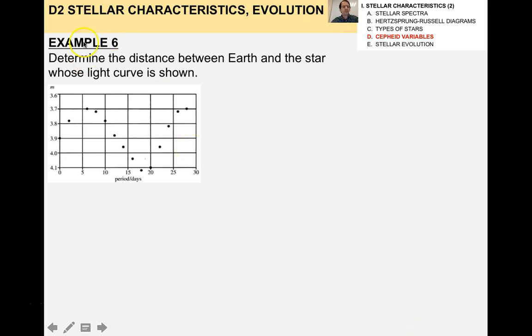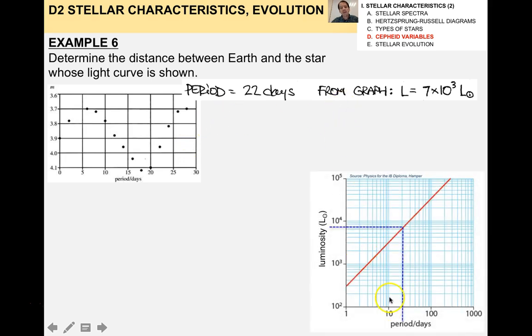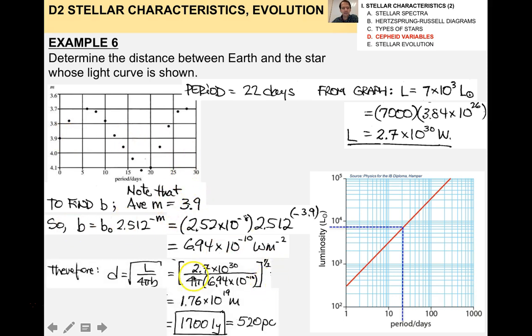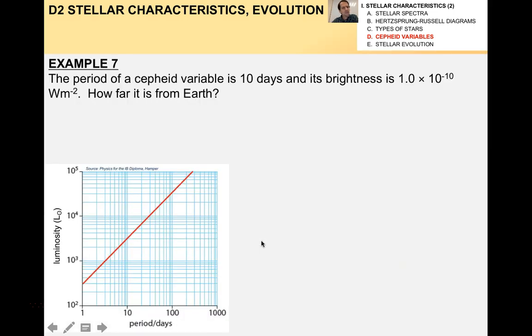So let's take an example here. From example six, determine the distance between the Earth and the star whose light curve is shown. Obviously the period here is about 22 days. And from the graph, we have that L is about 7,000. I just want to make sure you guys know how to read log graphs. Maybe I'll go over that in class with you guys. But anyway, L is about 7,000 solar luminosities. So L is about 2.7 times 10 to the 30. So the next thing we do is we find the brightness. And to find the brightness, we use this equation which comes from the apparent magnitude. Now, the magnitude here, you guys don't need to know about magnitudes in the current version of the IB curriculum. But note that the average here, and don't worry, we'll do more examples where you don't need to know the magnitude. The average magnitude here is about 3.9. So B is about 6.94 times 10 to the minus 10. And from our equation relating B and L and D, we get that D is about 1,700 light years, which is about 520 parsecs. Pretty cool.